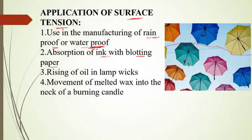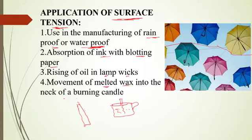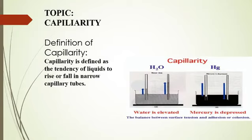Alternatively, you can see how oil rises in lamp wicks. Some of us make use of these traditional lanterns where it's made of a container with kerosene inside carried like a cup, and there is something like a thread which is a wick. How the oil rises, taps from the kerosene and rises to give power to the flame is an application of surface tension. Also, how melted wax moves on the neck of a burning candle. This is a burning candle and wax melts due to heat from the flames. The melting of this wax, how it moves into and sticks to the neck of the burning candle is also an application of surface tension.